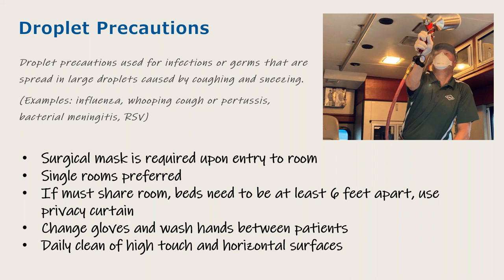Droplet precautions are used for large droplets from coughing and sneezing. Examples include influenza, whooping cough or pertussis, bacterial meningitis, and RSV — note that RSV also appears under contact precautions, so patients can be on more than one type of isolation. Use a surgical mask, single rooms if possible, beds at least six feet apart if sharing a room, use a privacy curtain, change gloves and wash hands between patients, and do daily cleaning of high-touch and horizontal surfaces.